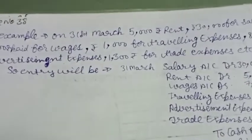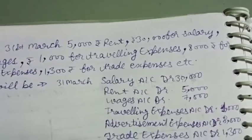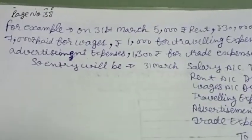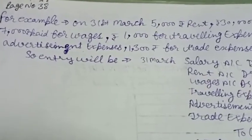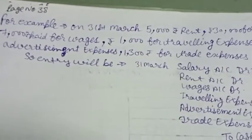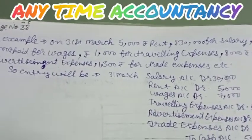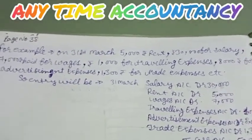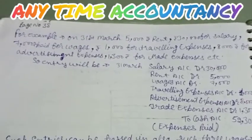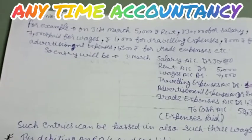For example, on 31st March: five thousand rupees rent, thirty thousand for salary, seven thousand for wages, one thousand for travelling expenses, eight thousand for advertisement expenses, one thousand three hundred for trade expenses, etc. All these expenses occurred on 31st March where cash was paid.